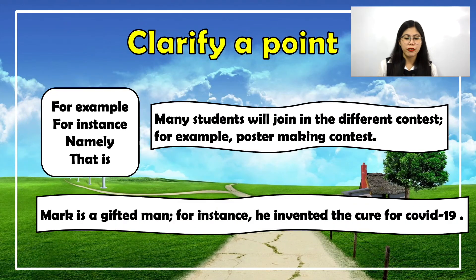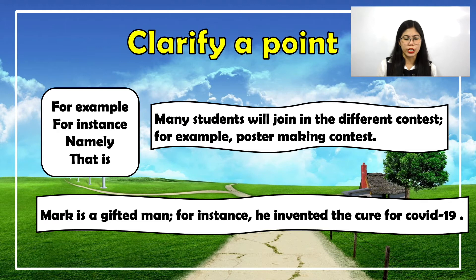Next, if you want to clarify a point or explain more about a topic, you may use the following conjunctive adverbs: for example, for instance, namely, that is. Example: 'Many students will join in the different contests; for example, poster-making contest.' The conjunctive adverb 'for example' clarifies the first independent clause about students joining contests by specifying what kind of contest — poster-making.